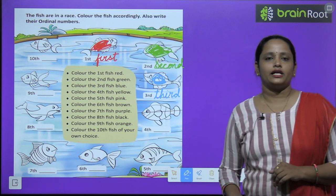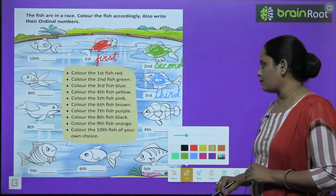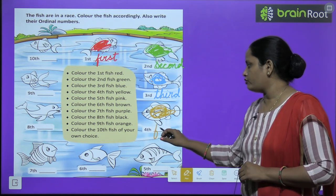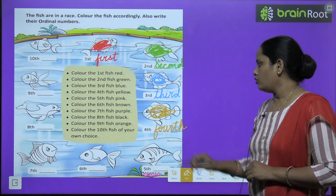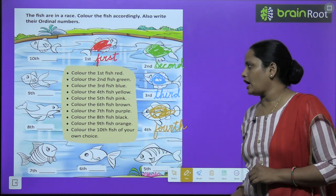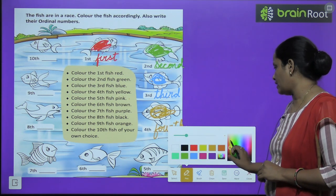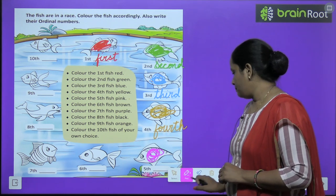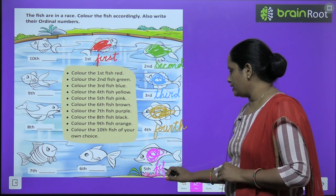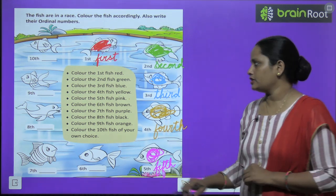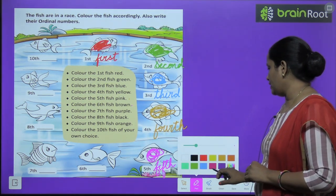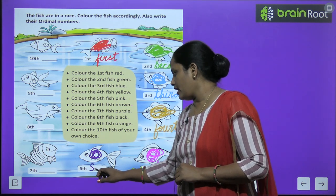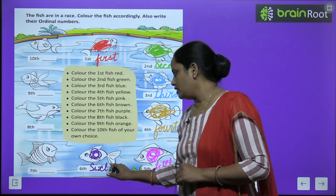Now the fourth fish should be yellow color. Here is the fourth fish — we do yellow color and write F-O-U-R-T-H, fourth. Now the fifth fish should be pink color. Here is the fifth fish — we do pink color and write F-I-F-T-H, fifth. Now the sixth fish should be purple color — we do it purple and write S-I-X-T-H, sixth.